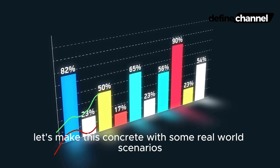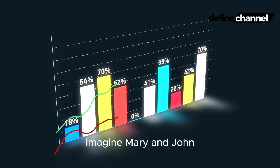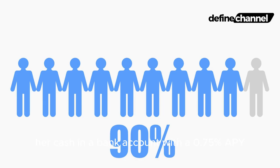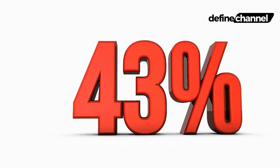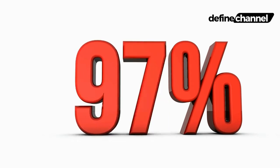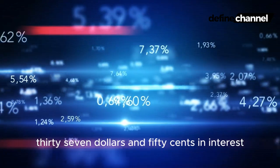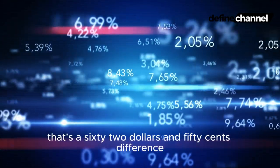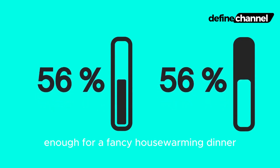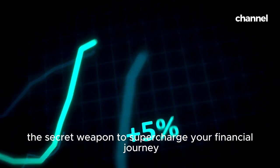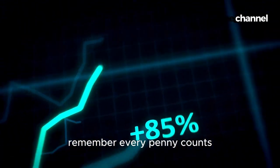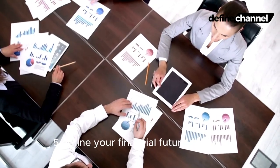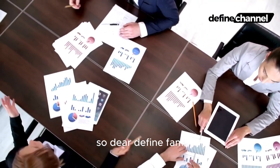Let's make this concrete with some real-world scenarios. Imagine Mary and John, both saving five thousand dollars for a down payment on their dream house. Mary stashes her cash in a bank account with a 0.75 percent APY, while John opts for a high-yield savings account with a two percent APY. Fast forward a year — Mary earns a paltry thirty-seven dollars and fifty cents in interest, while John pockets a cool one hundred dollars. That's a sixty-two dollar and fifty cent difference — enough for a fancy housewarming dinner. This shows how APY can be the secret weapon to supercharge your financial journey.